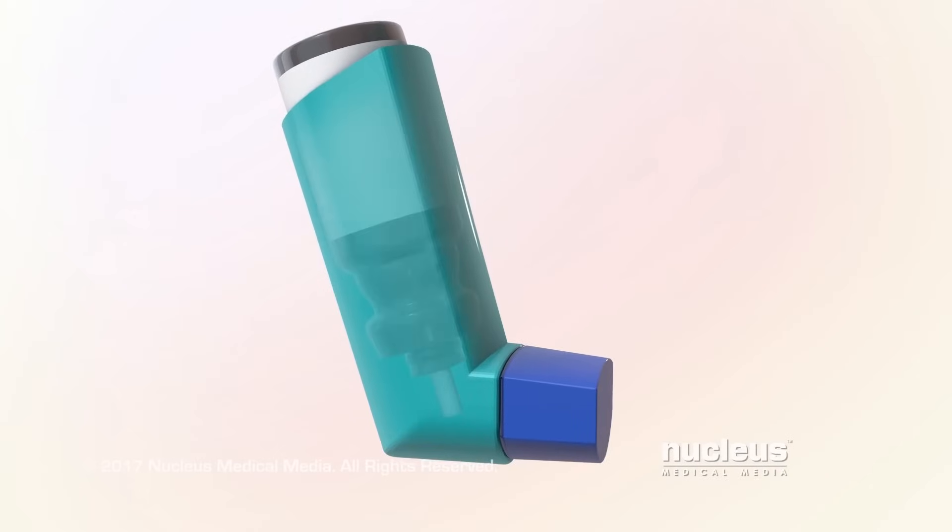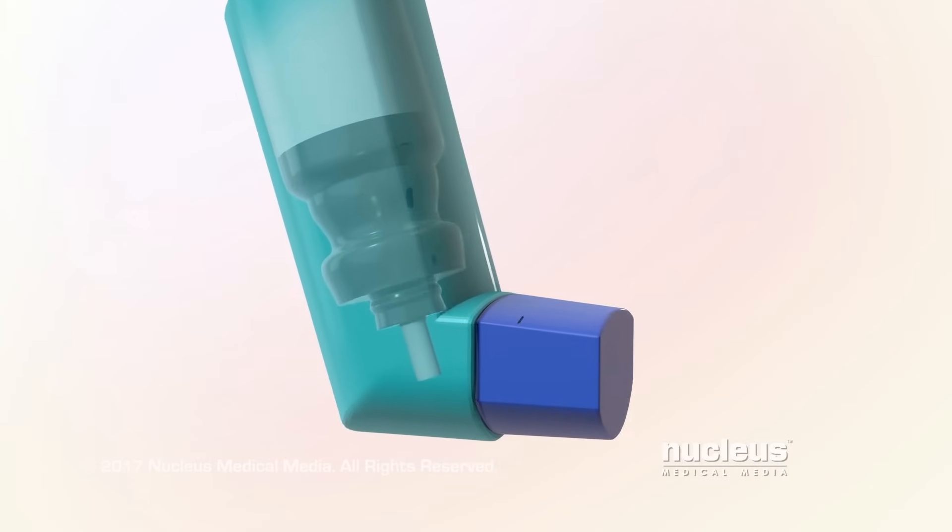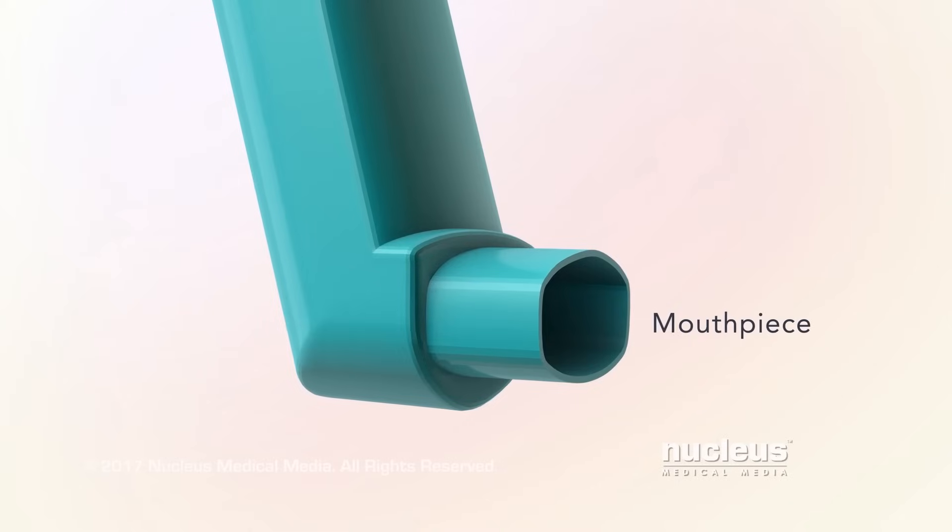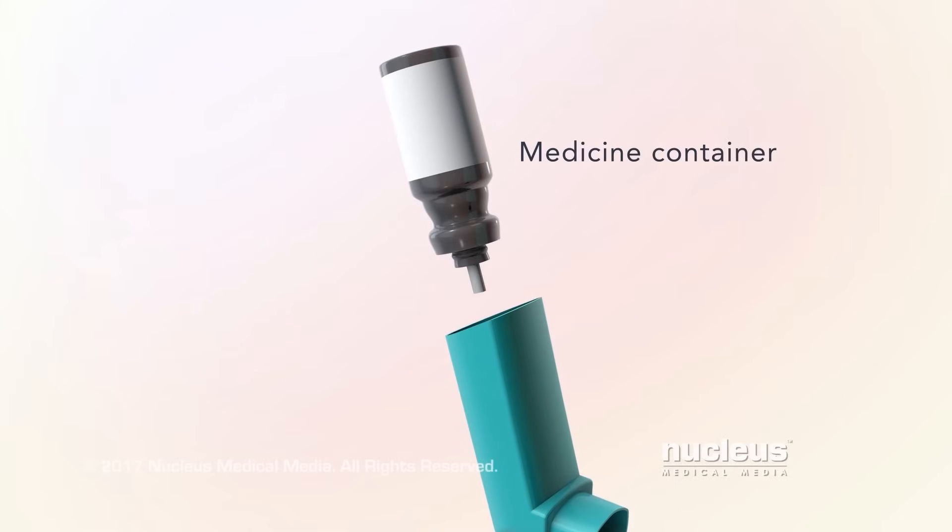A metered dose inhaler has three main parts: the mouthpiece cover, the mouthpiece, and the medicine container.